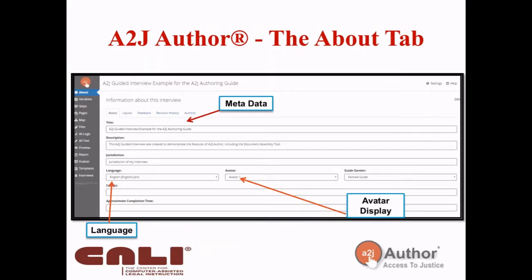The About tab has different metadata information on the main screen, and also sub-tabs: Layout, Feedback, Revision History, and Authors. Revision history and author information is helpful when you're trying to document what version you're on, who worked on it last, and who may have touched it five years ago when it was last authored.